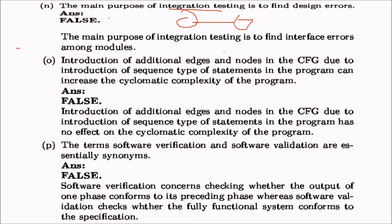Statement o: introduction of additional edges and nodes in the control flow graph due to sequence-type statements can increase the cyclomatic complexity. This is false — introduction of sequence-type statements has no effect on the cyclomatic complexity of the program.